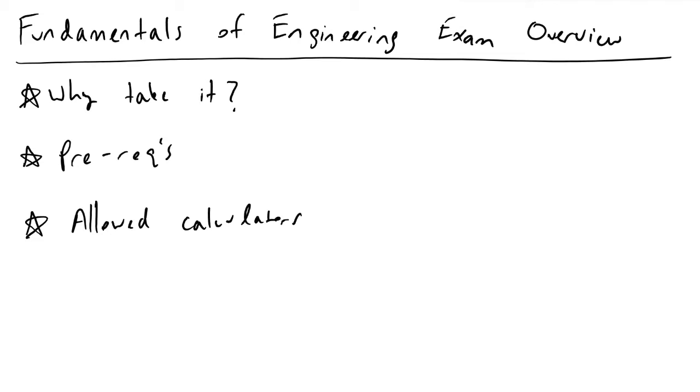The requirement to get licensed as an EIT or PE is that you go to an ABET certified university and graduate and have that diploma in your hand from that ABET certified program.